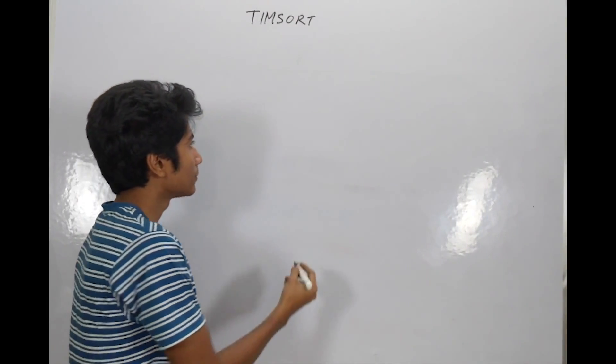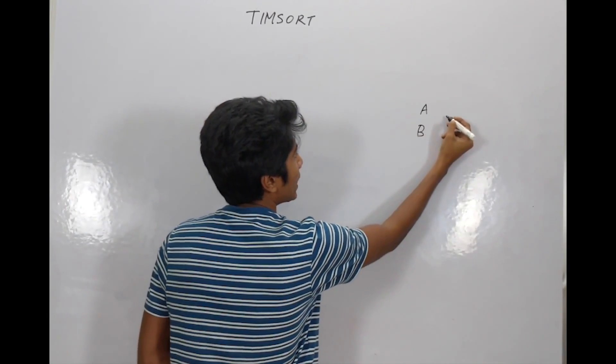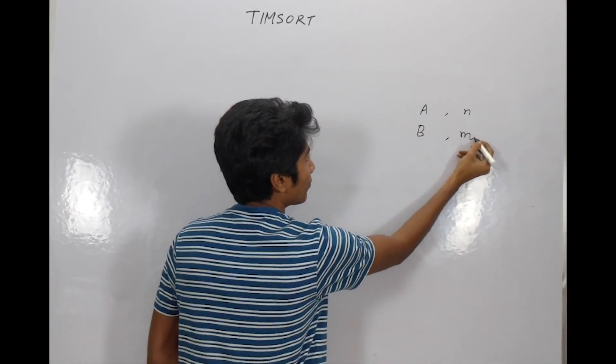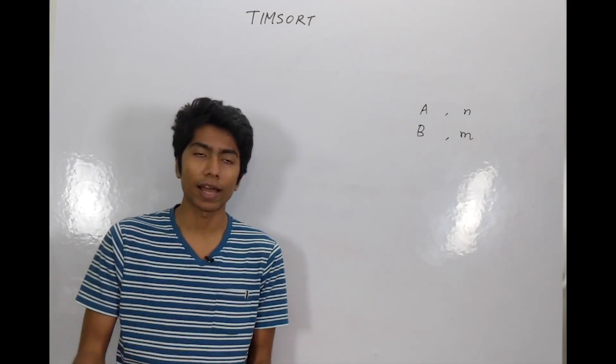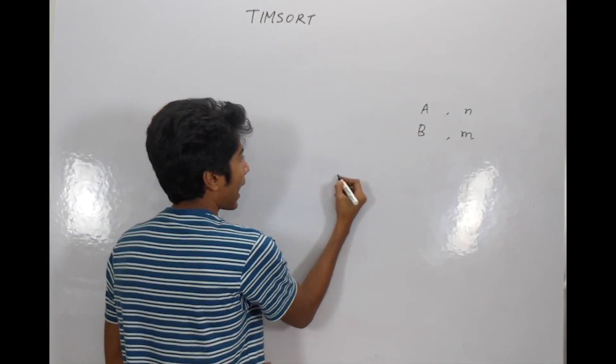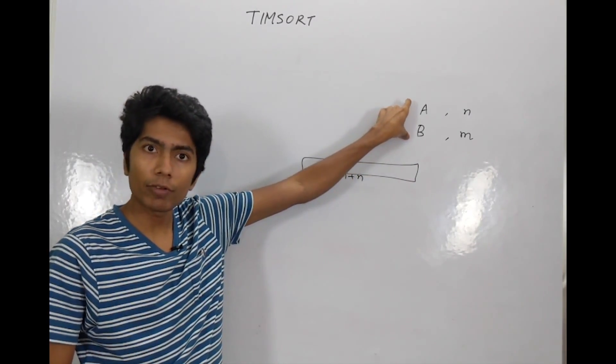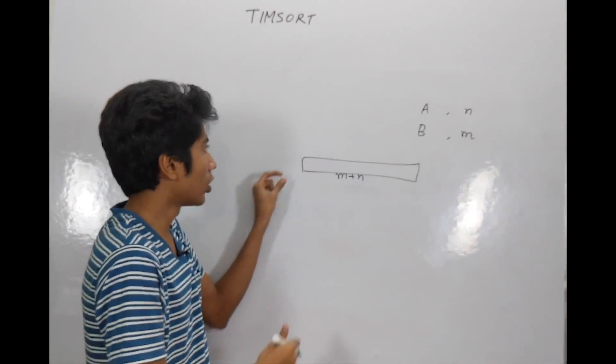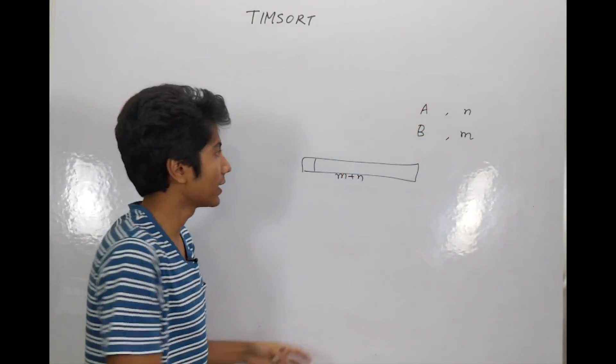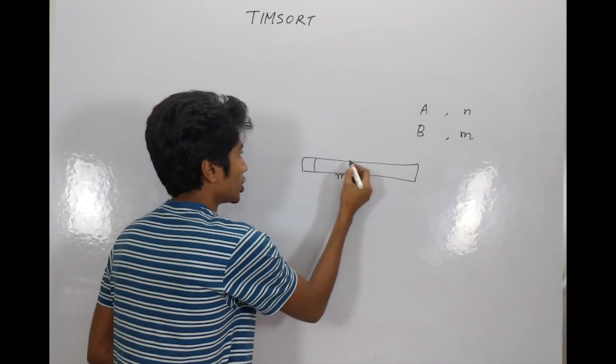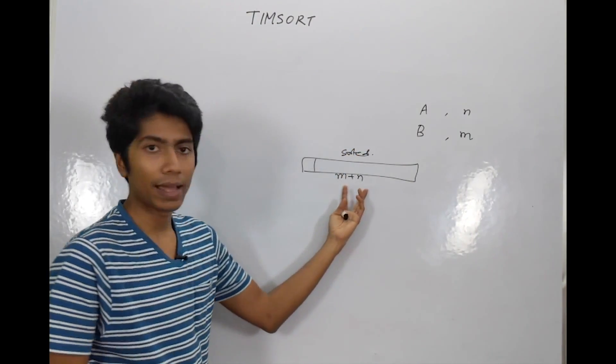So the way we are going to handle this is by looking at an array A and an array B of size N and size M. Now the standard way that Merge Sort actually performs a merge of two sorted arrays is to take an array of size M plus N and then pick up the smallest element from A and B, push it onto the first position and continue doing this till A and B are exhausted and then have a large array, which is a sorted array of elements in A and B of size M plus N.